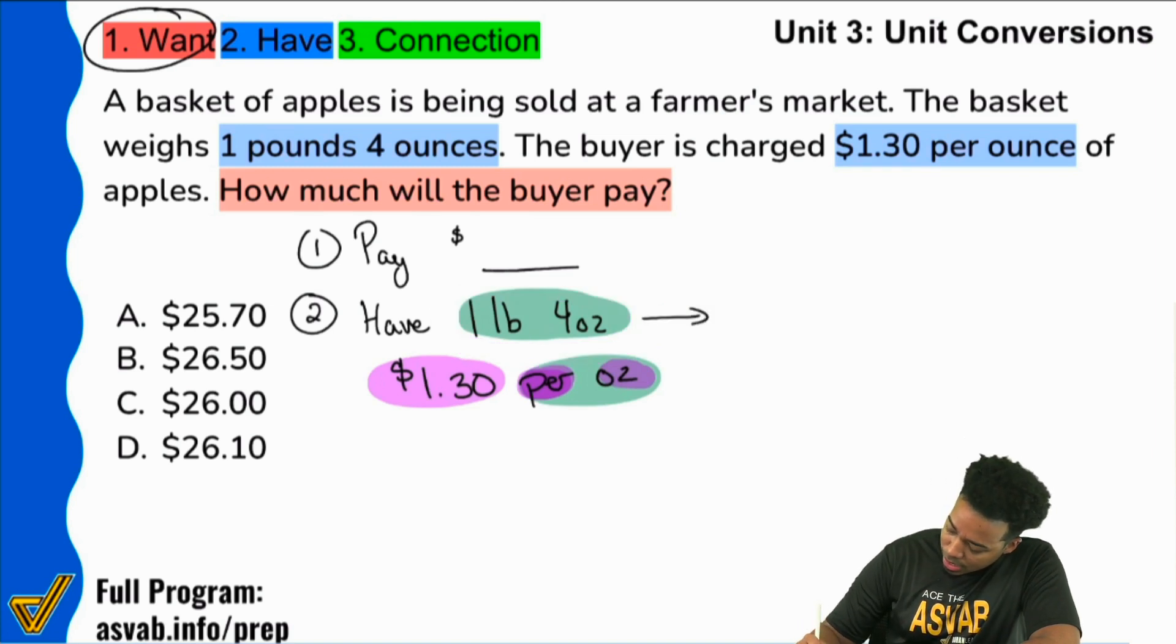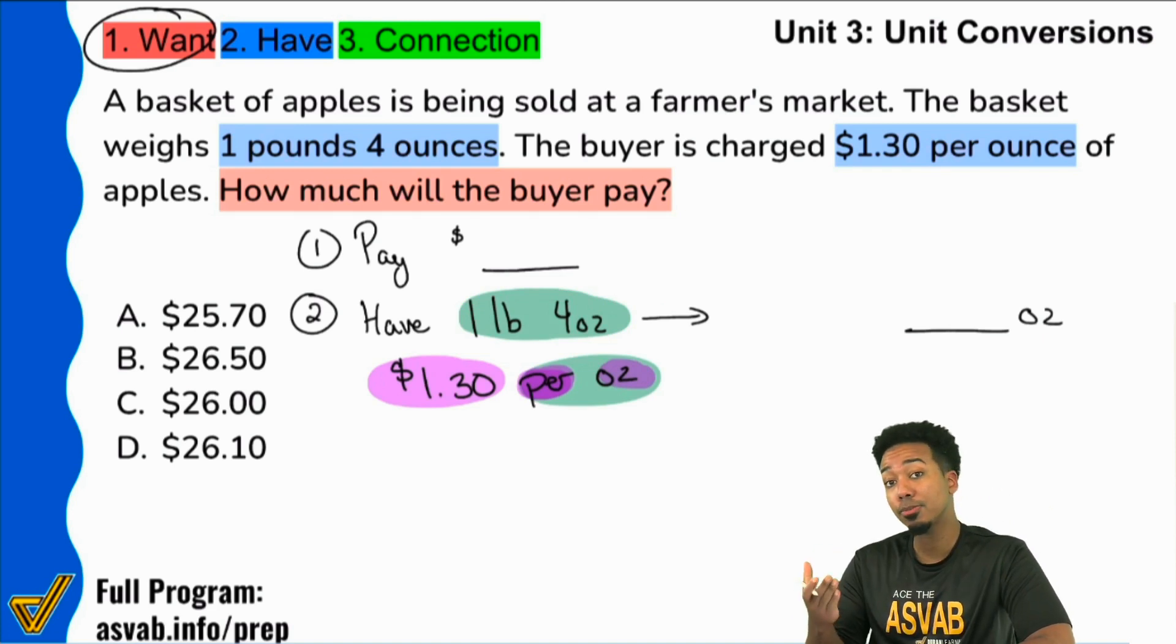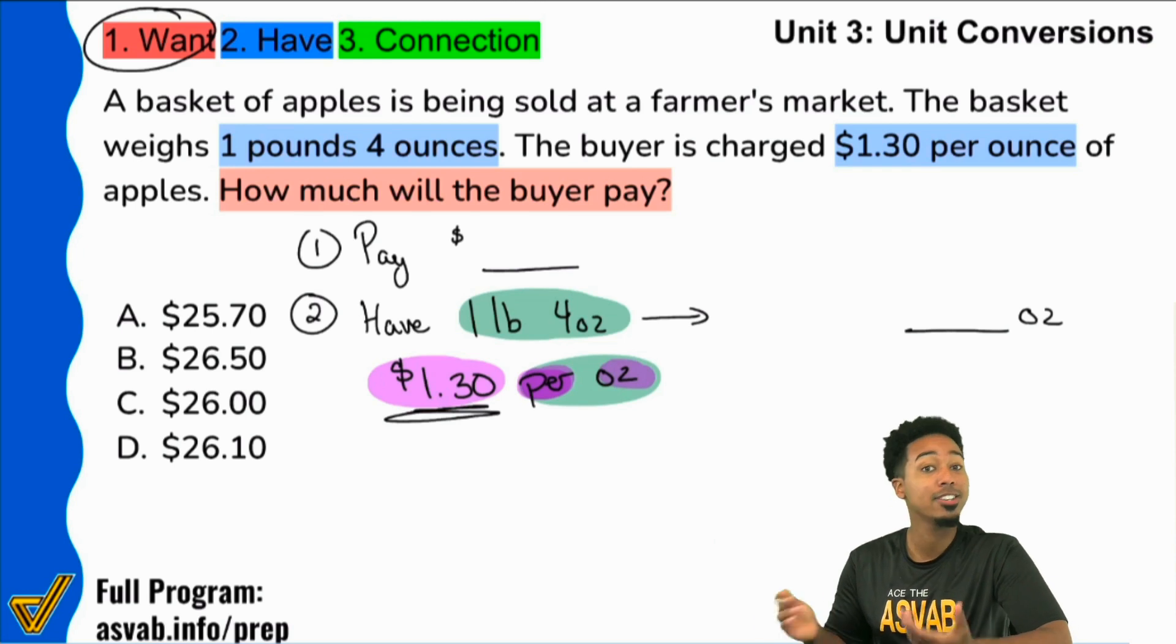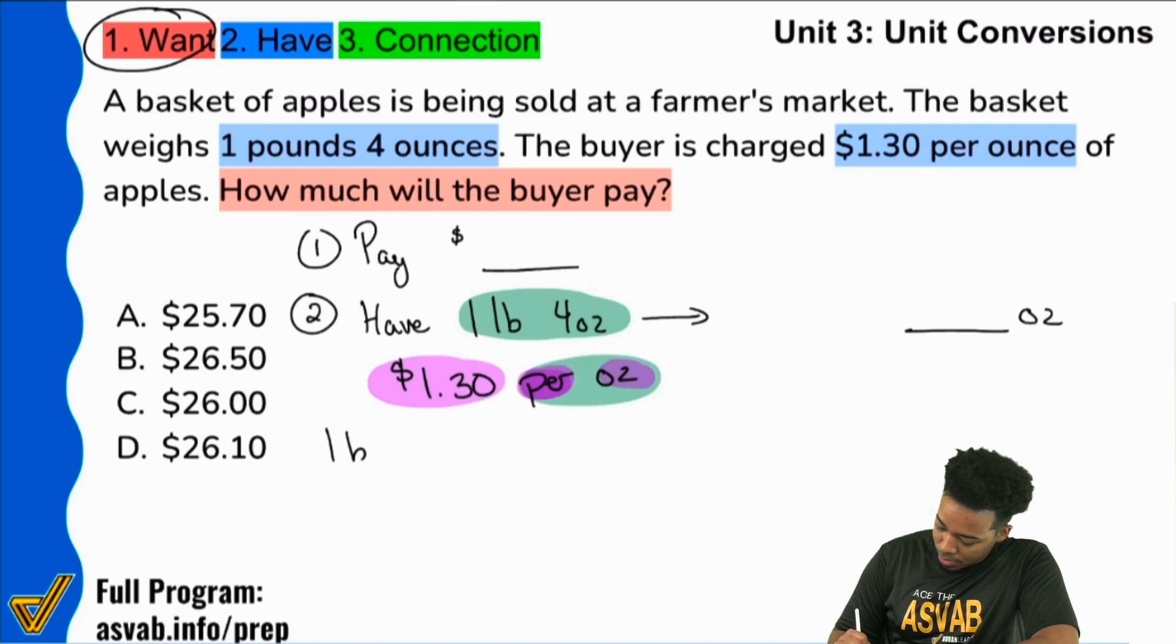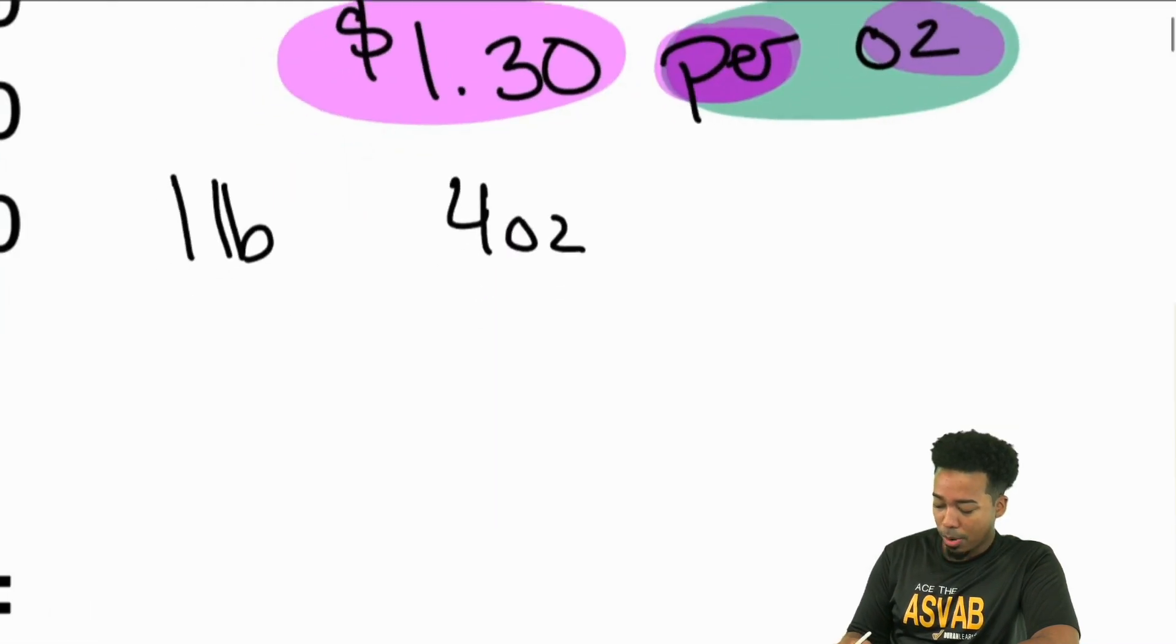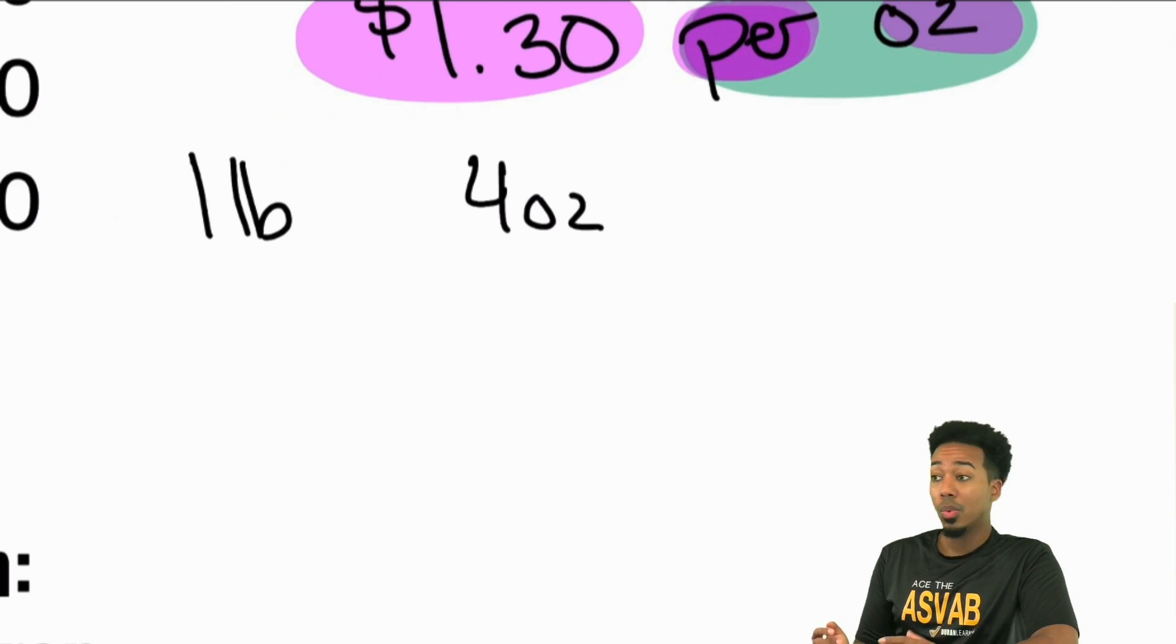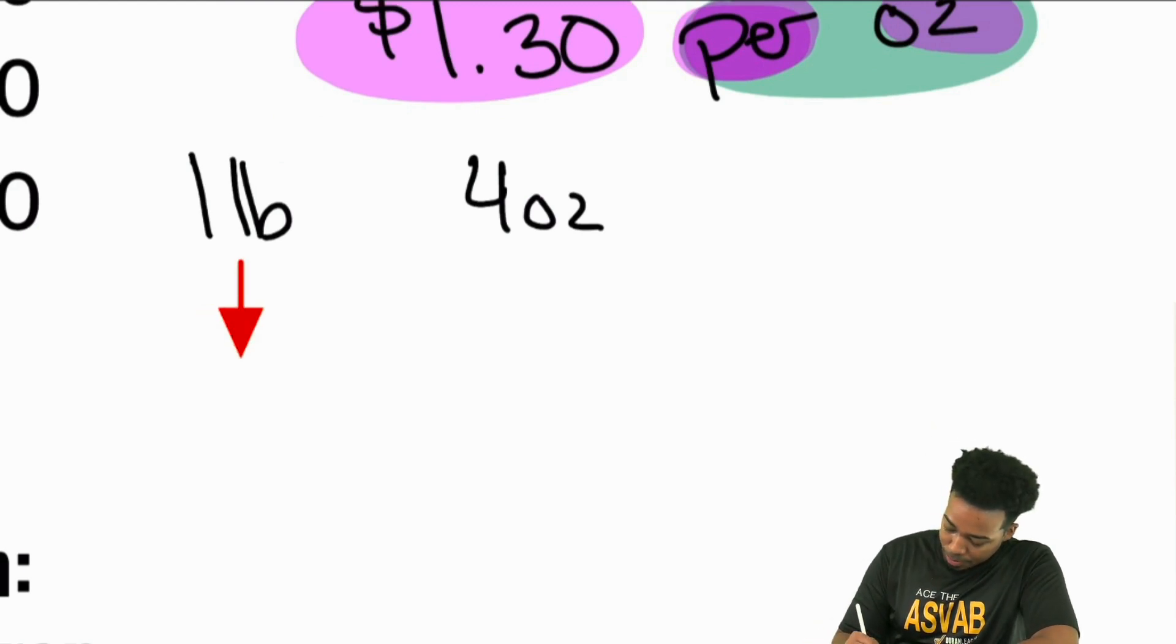But here's how we're going to get this done here. We're going to convert this into just purely ounces. Because once we convert this to pure ounces, then just multiply by that $1.30 per ounce, and you're good. So how do we do that? Well, let's go ahead and take a look right over here. We have one pound and four ounces. To take one pound and turn that into ounces, well, the thing is we know how many ounces one pound is. Every pound is 16 ounces.